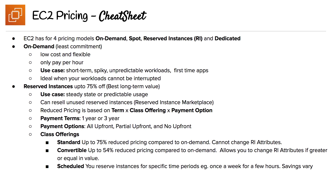We're on to the EC2 pricing cheat sheet, and this one is a two-pager. EC2 has four pricing models: on-demand, spot, reserved instances (also known as RI), and dedicated. Looking first at on-demand, it requires the least commitment from you. It is low cost and flexible — you only pay per hour. The use cases are for short-term, spiky, unpredictable workloads or first-time applications. It's ideal when you want workloads that cannot be interrupted, whereas spot is when you can have interruption.